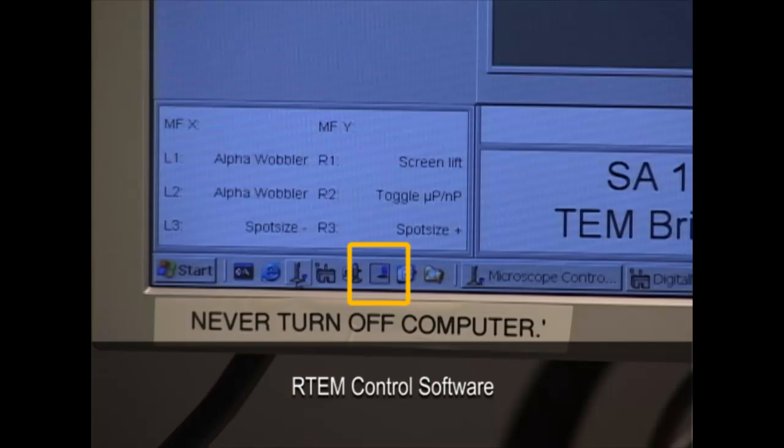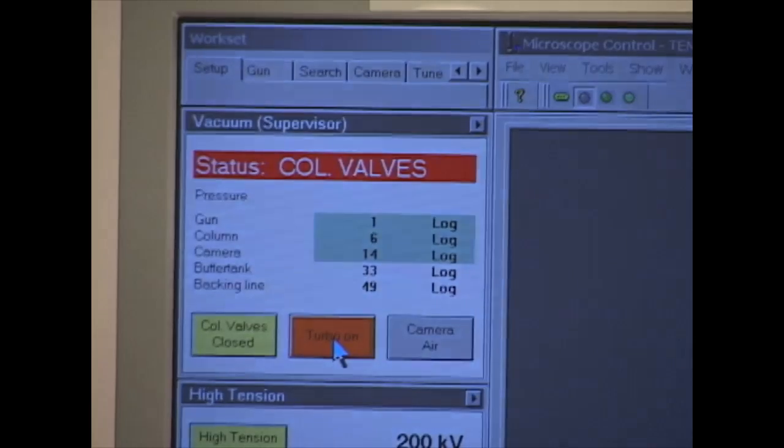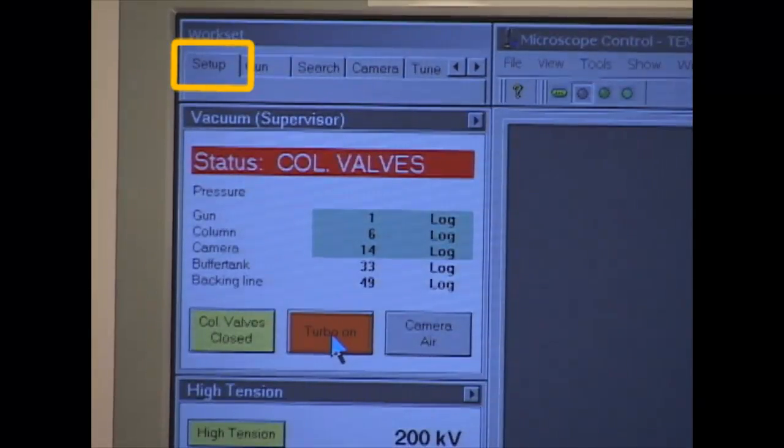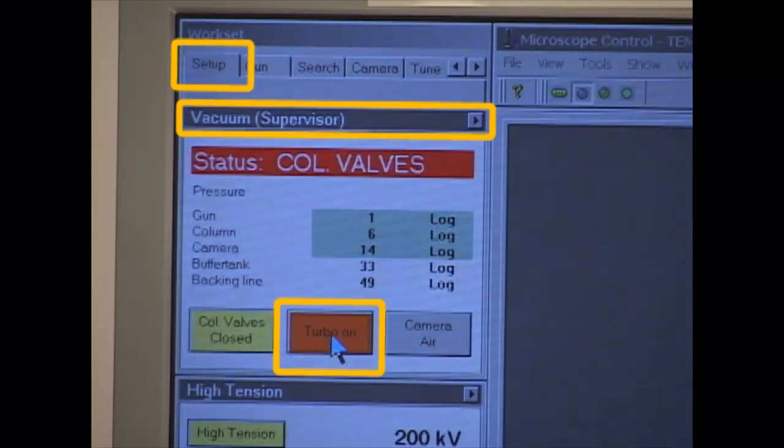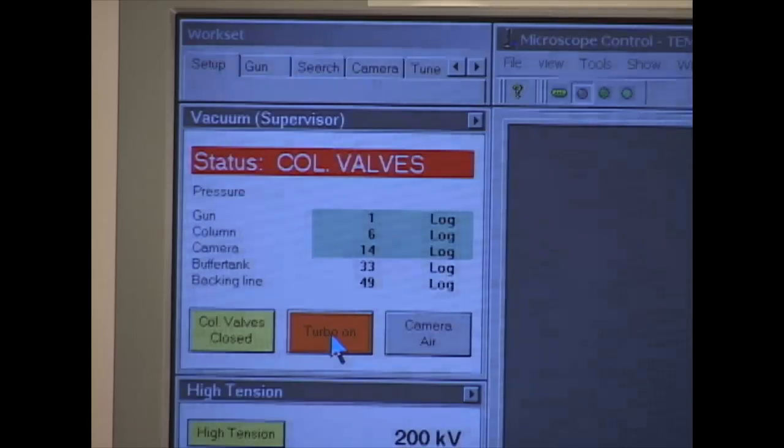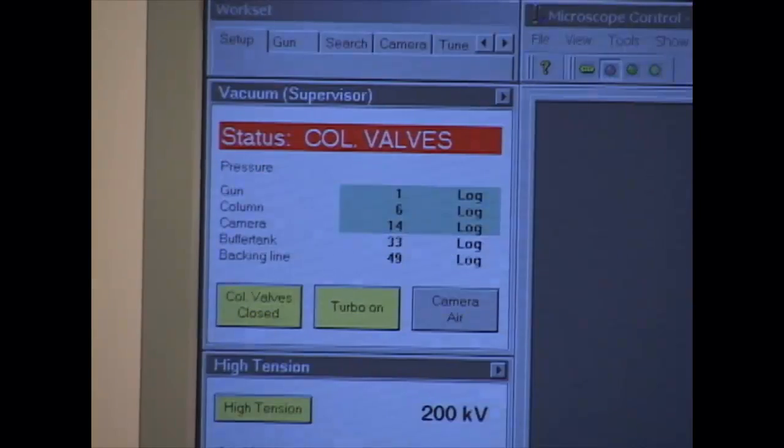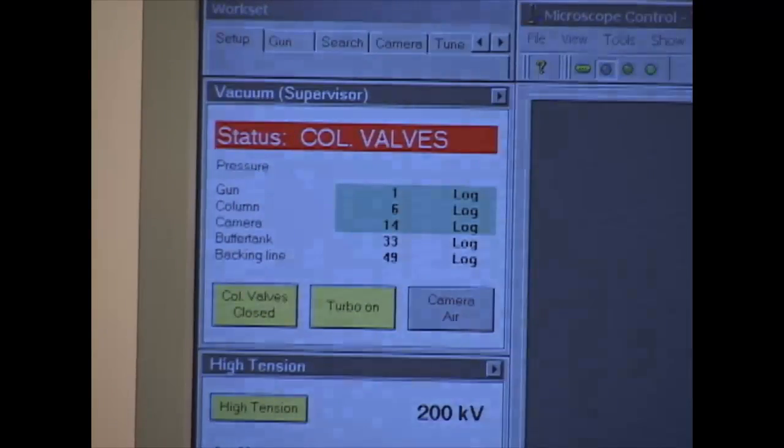The last software is the RTEM control. Select Setup, Vacuum, and Turbo On, and hear the vacuum pump sound. After three minutes, the Turbo On box changes to yellow.